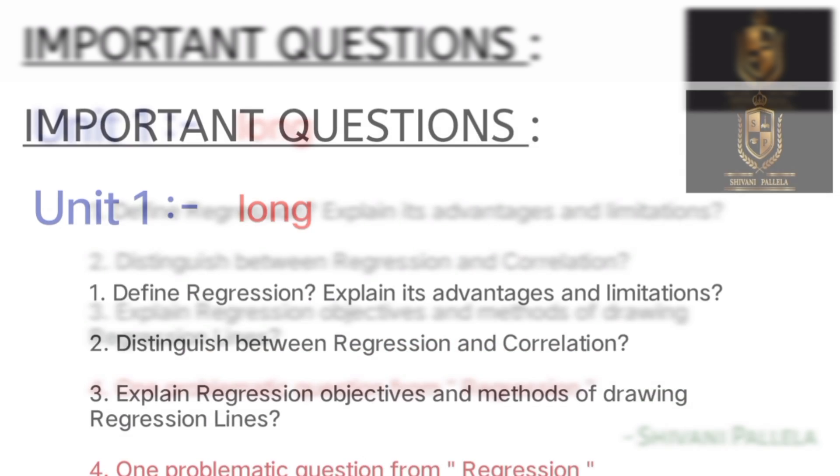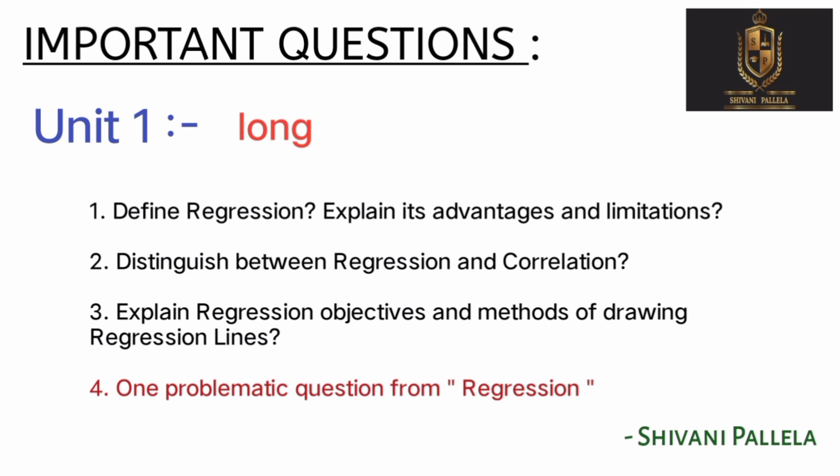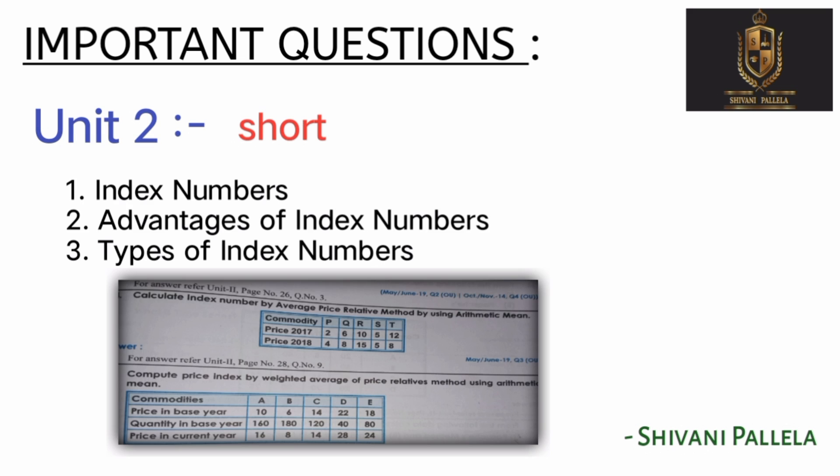Coming to Unit 1 long questions — theory questions are 1, 2, 3. In Section B, unit number 1 has two internal choice questions covering both theory and problematic. Three theory questions are prepared for each question.